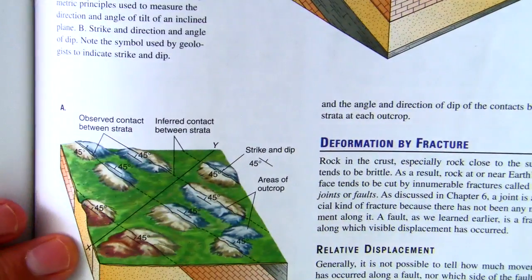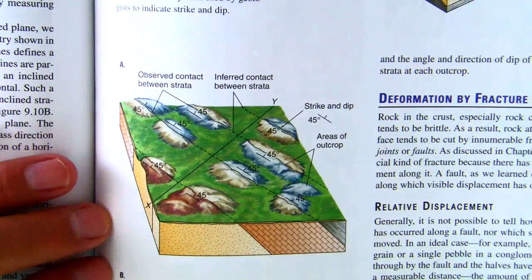Now we use this when we're mapping and what have you. Here's an area where you're walking along the surface here. You can't really see what's going on underneath the surface.